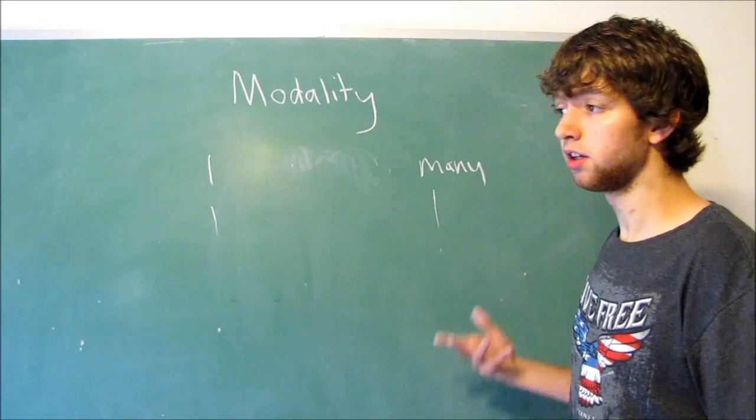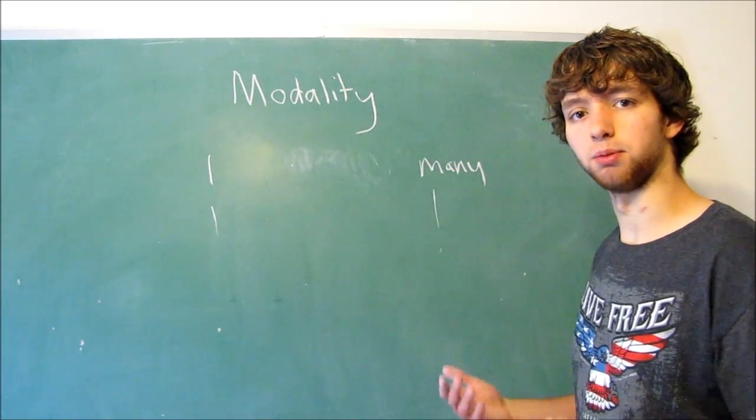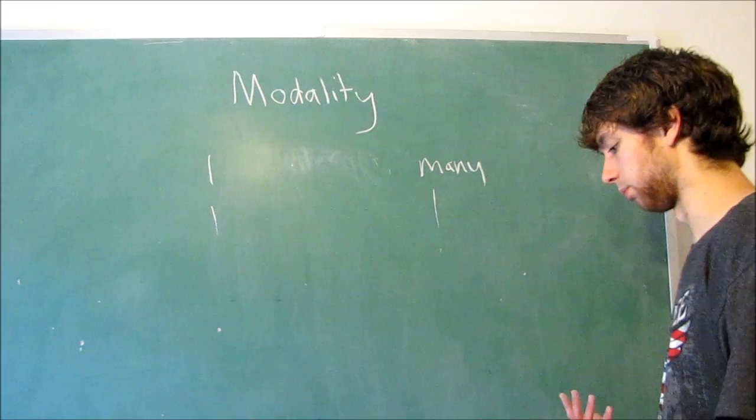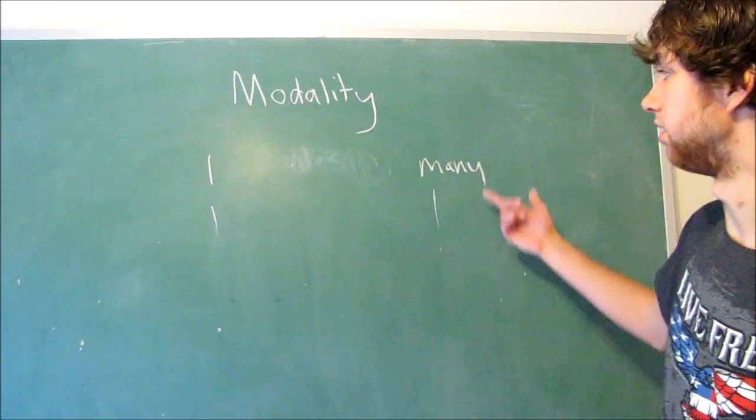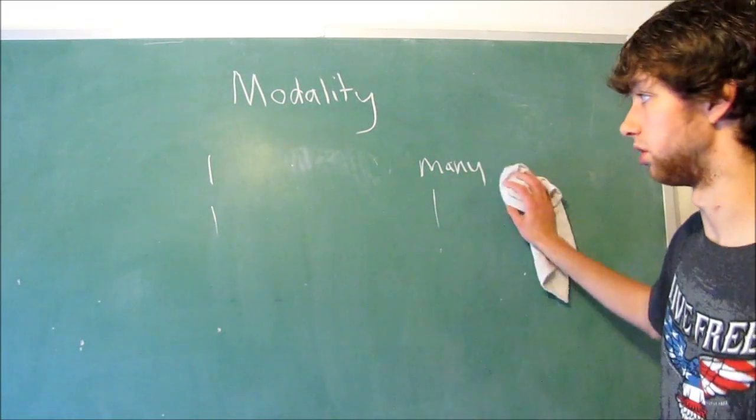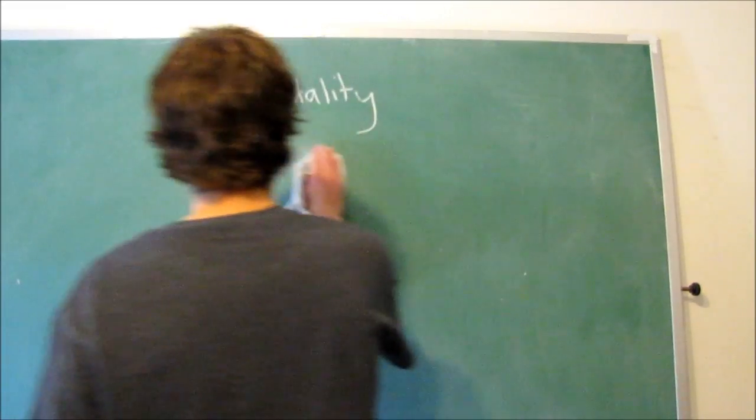If we want to do a many to many, we just need an intermediary table. The same concept kind of applies, but we don't necessarily have to go through that. Just break it into a one to many, two one to many relationships. Alright. So let's try this.